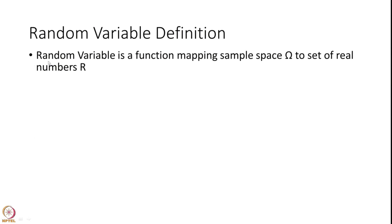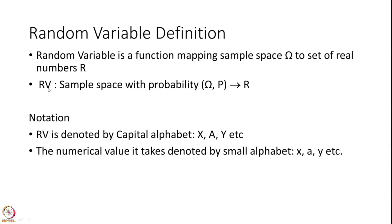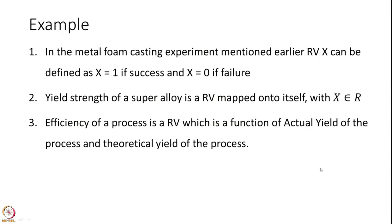Formally, a random variable is a function mapping a sample space omega to a set of real numbers R. The notation we use going forward is that capital letters X, Y, etc. will denote a random variable, and actual numerical values it takes will be denoted by small alphabets. So in the case of metal foam, if it is a successful experiment we say random variable X equals 1, and if it is a failure the random variable takes value 0.